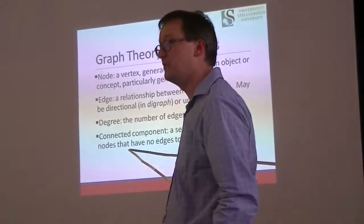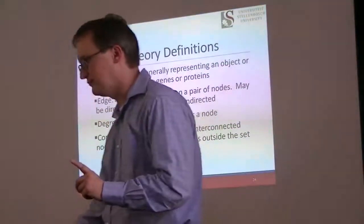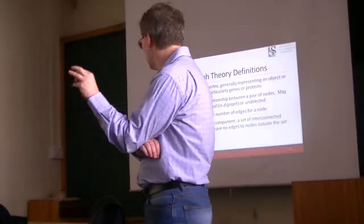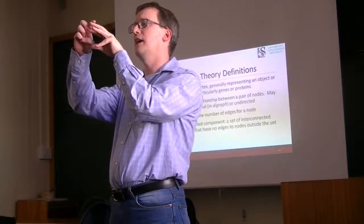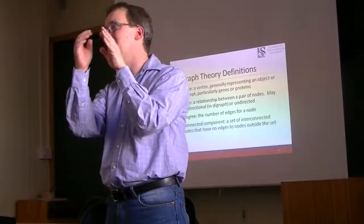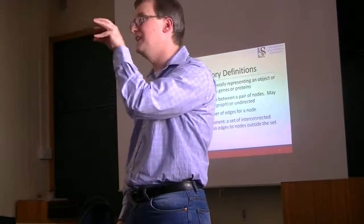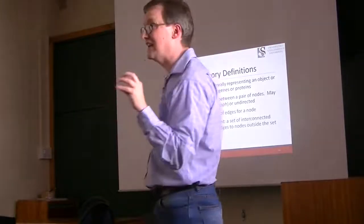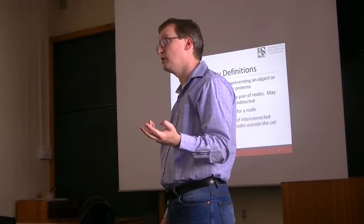When we talk about a connected component, we're talking about a set of interconnected nodes that have no edges to nodes outside the set. Let us imagine the extreme case of a connected component. This is maybe a set of five genes. A is connected to B, A is connected to C, A is connected to D, A is connected to E, B is connected to C, B is connected to D, B is connected to E. These five nodes form what we call a clique, completely connected. Something like that, if it has no connections to any other five genes, represents a connected component.